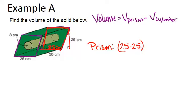And then we want to multiply by the height of the whole prism, which is 30. So that means that the volume of the prism is 18,750 centimeters cubed. So that's the volume of the prism.